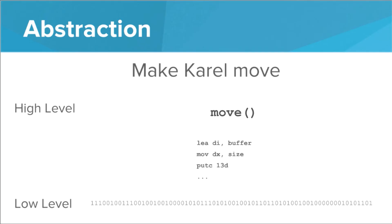If we had to worry about all those ones and zeros when writing a Karel program we would never get anything done. No one would ever want to program because it'd be miserable. What's funny is assembly used to be the standard programming language — there's a video game, RollerCoaster Tycoon, that was built 100% in assembly. So we're getting better and better at making these abstractions so we don't have to worry about low level things. Programming languages give us the ability to speak to the computer at a high level, and all these low level things are abstracted away.